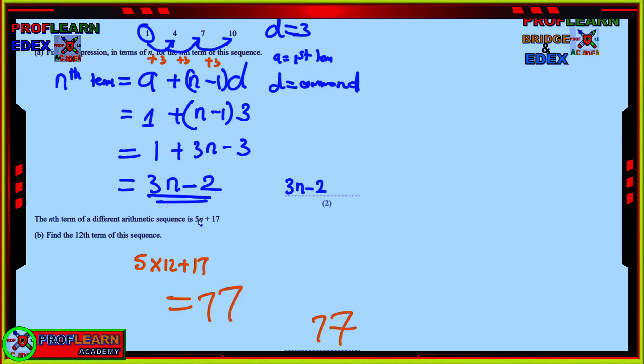Now, if you are given an nth term like this, for instance, 5N plus 17, in order to get a given term, for instance, term number 2, you replace N with 2 times 5 plus 17. But in this question, we were supposed to find the 12th term, which is going to be 5 times 12 plus 17, which translates to 77 because 5 times 12 is giving us 60 plus 17, that gives us 77.